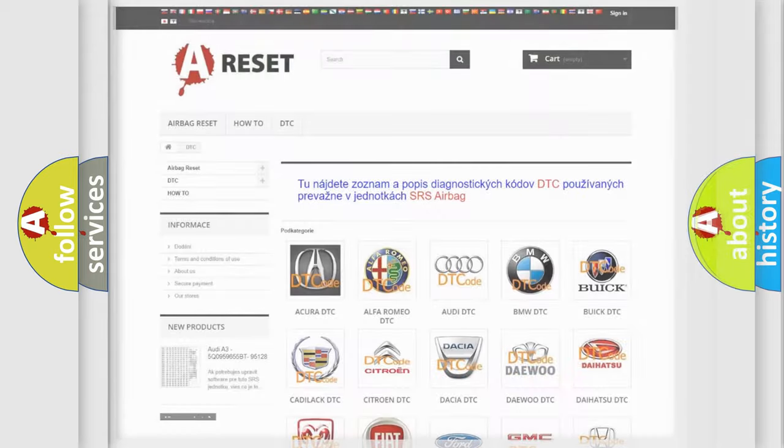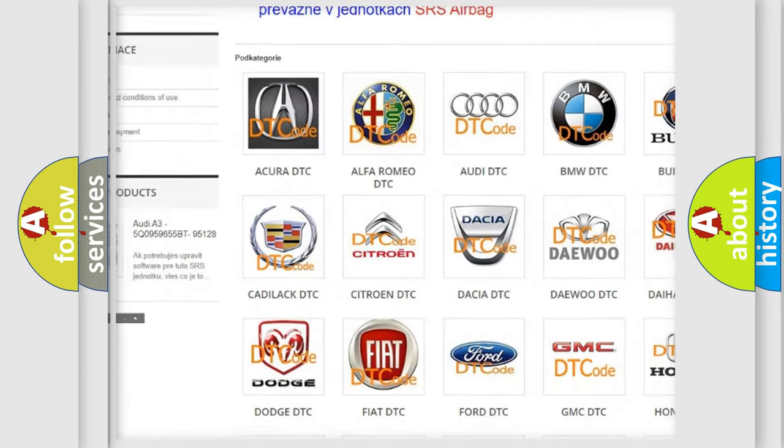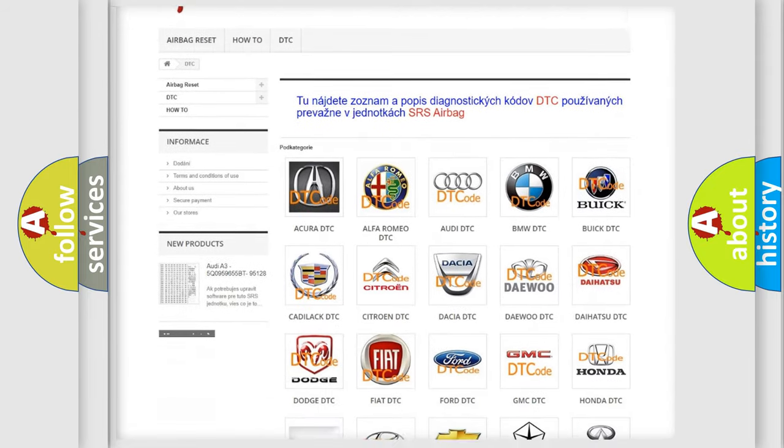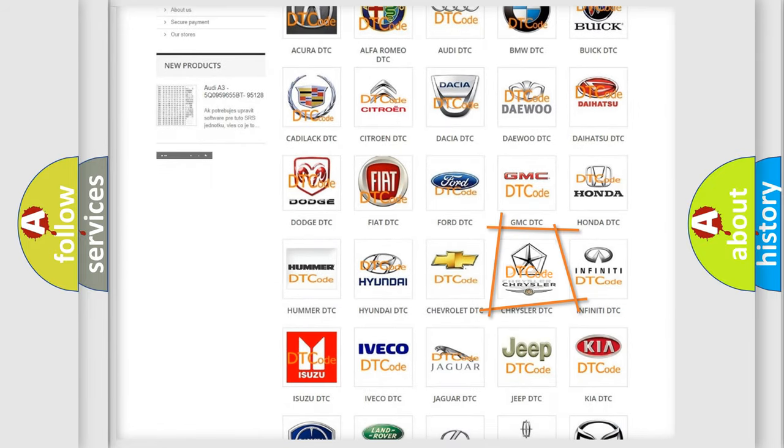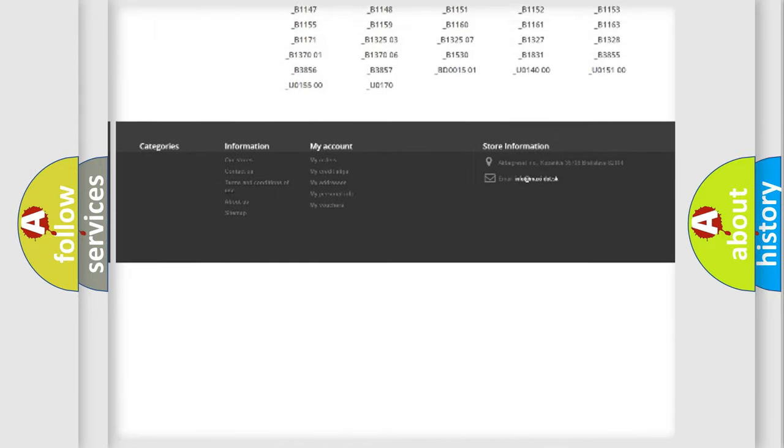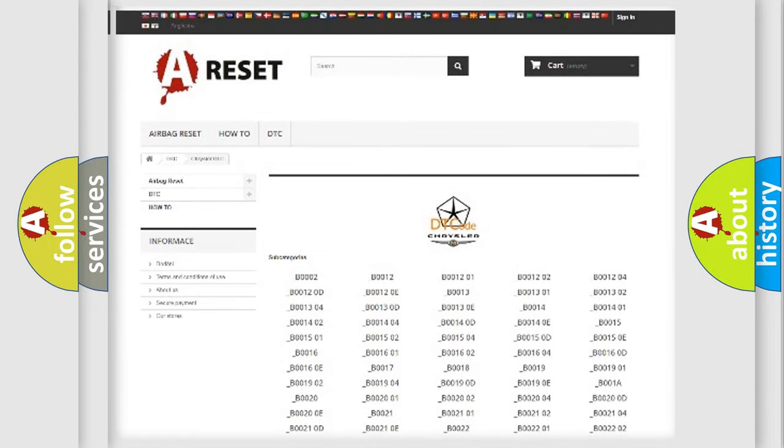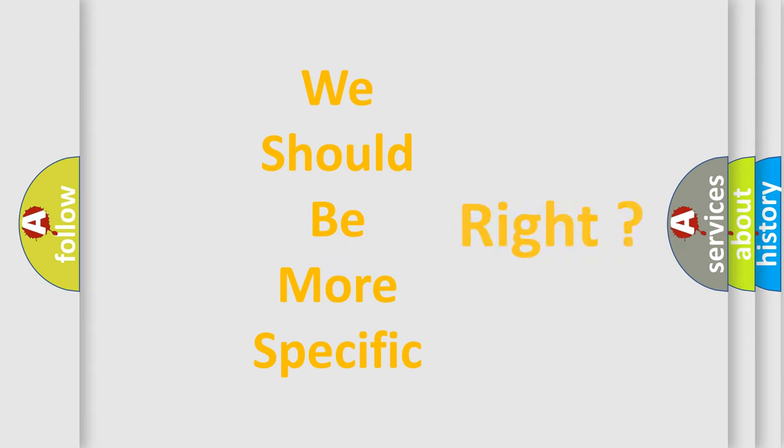Our website airbagreset.sk produces useful videos for you. You do not have to go through the OBD2 protocol anymore to know how to troubleshoot any car breakdown. You will find all the diagnostic codes that can be diagnosed in Chrysler vehicles, and many other useful things. The following demonstration will help you look into the world of software for car control units.